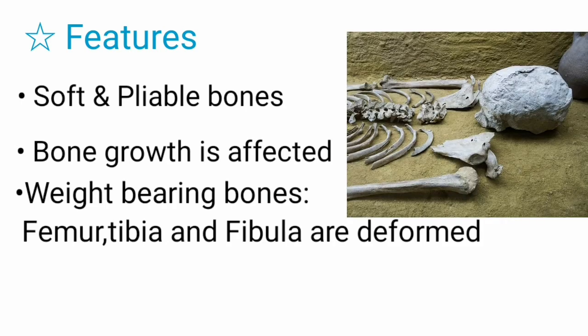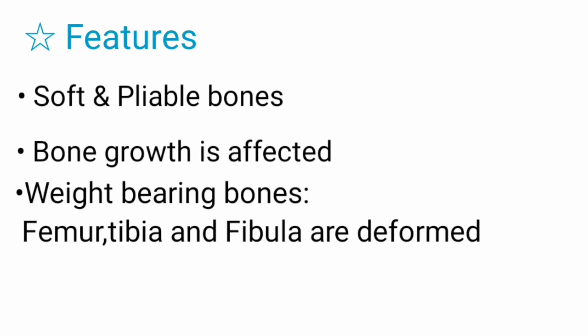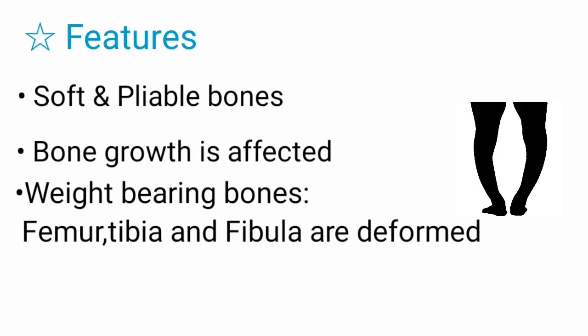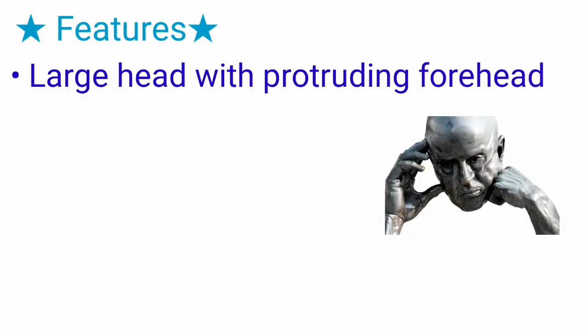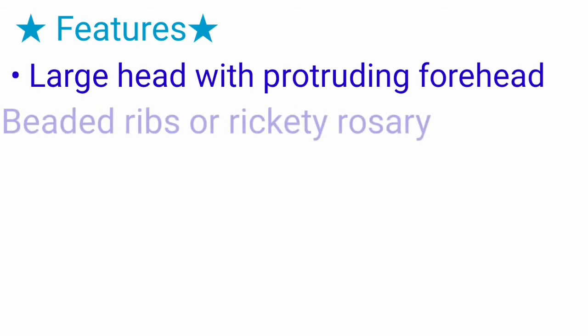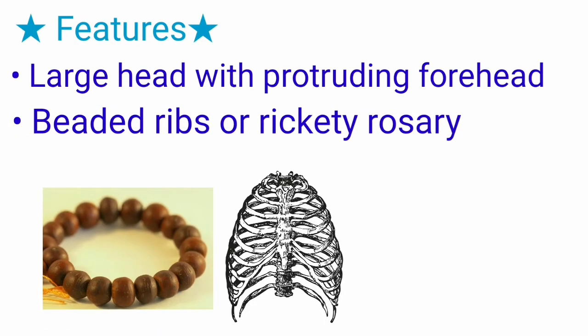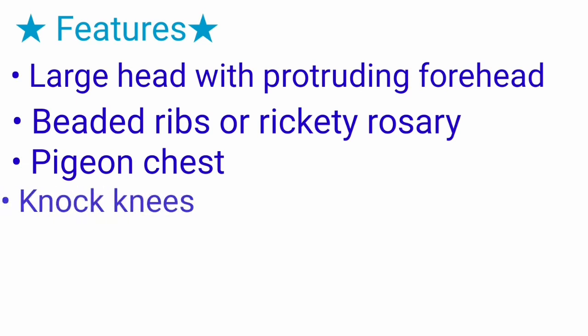The femur, tibia and fibula are deformed especially when the child begins to stand, resulting in the characteristic bowing of legs. Other main features of rickets include a large head with protruding forehead, rib beaded appearance also called rickety rosary, and the chest gives a pigeon chest appearance, along with knock knees.